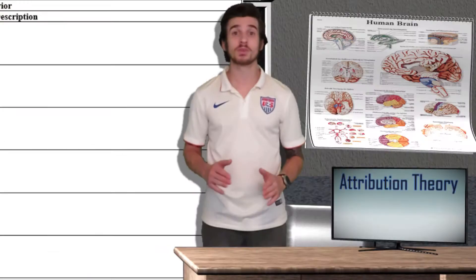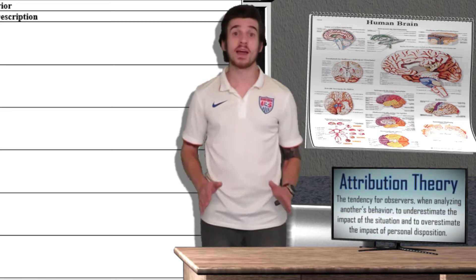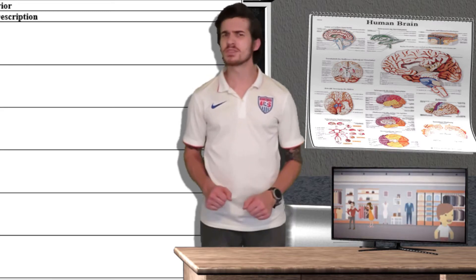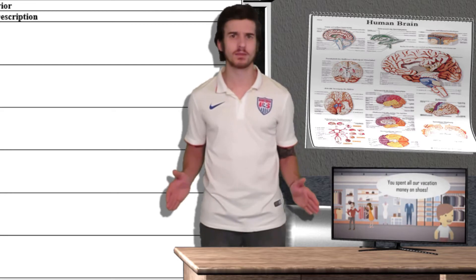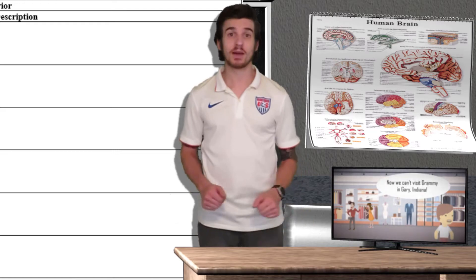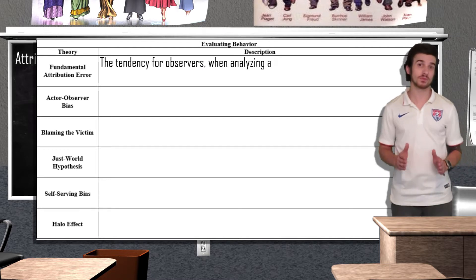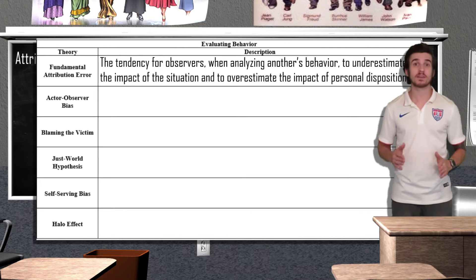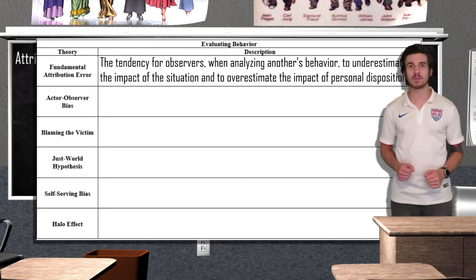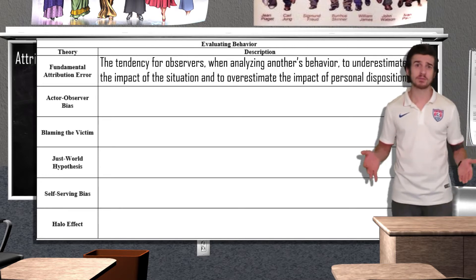Now let's talk about attribution theory. Attribution theory is the theory that we tend to give causal explanations for people's behavior, attributing it either to the situation or the person's disposition. Imagine you're in a store and you see a wife yelling at her husband — is this husband just a jerk with an aggressive personality, which is a dispositional attribute, or is this behavior a reaction to a situational event? Oftentimes we experience what is known as fundamental attribution error — the tendency for observers, when analyzing another's behavior, to underestimate the impact of the situation and to overestimate the impact of personal disposition. For example, if your teacher hands back tests and you see your classmate got a very bad grade, you might attribute it to them being lazy and not studying, even though there could be situational factors like not enough sleep, being sick, or issues in the family.